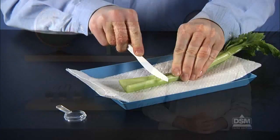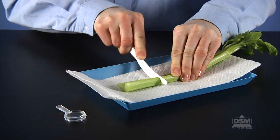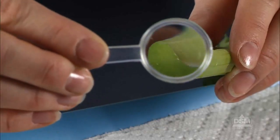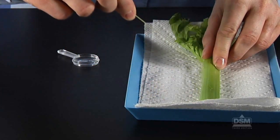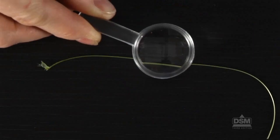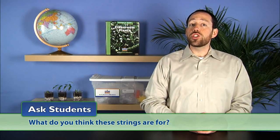Instruct students to cut about five centimeters off the bottom of the stem and examine the cross section with a magnifier. Students should then peel off one or two of these strings from the outside edge of the stalk and look at them more closely with a magnifier. Ask students, what do you think these strings are for? Accept all ideas.